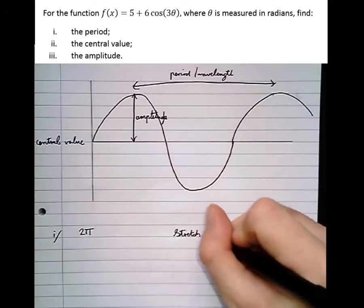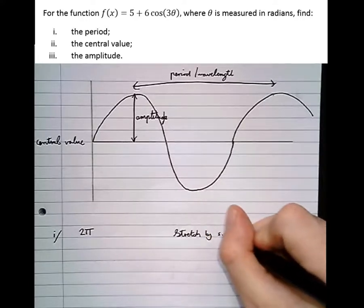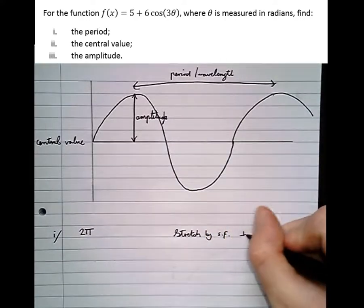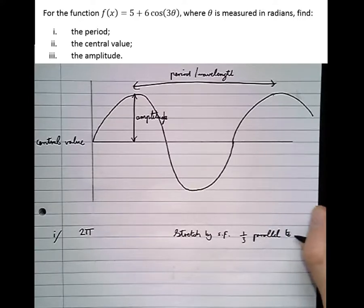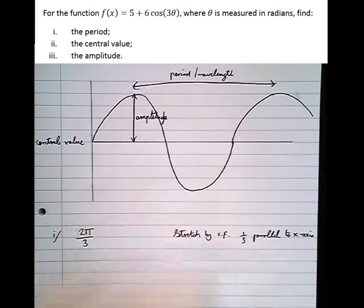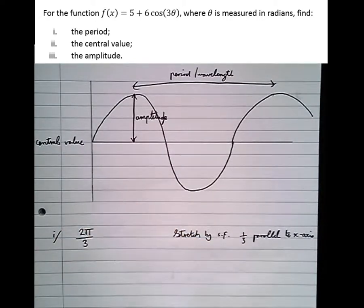Stretch by scale factor 1/3 parallel to x-axis. So having done that, the period must also be stretched by a scale factor of a third. Therefore, rather than being 2π, it's 2π/3 now.